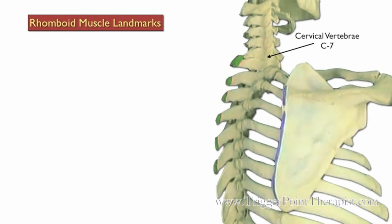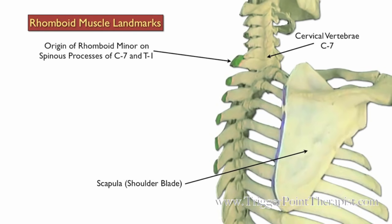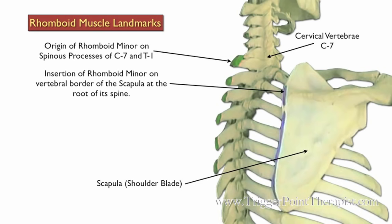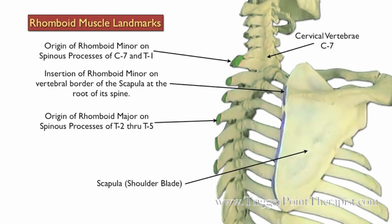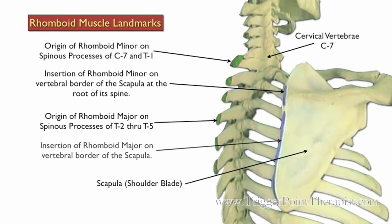We'll take a look at the landmarks for the rhomboid muscle. We have the cervical vertebrae at C7 and the scapula. The rhomboid minor originates on the spinous processes of C7 and T1 and inserts on the vertebral border of the scapula at the root of its spine. The rhomboid major originates on the spinous processes of T2 through T5 and inserts on the vertebral border of the scapula.